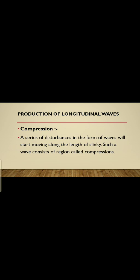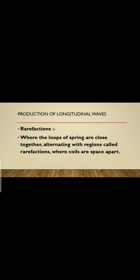A series of disturbances is produced in the form of waves traveling along the length of the slinky. Such a wave consists of regions known as compressions, where the loops of the spring are close together, alternating with regions called rarefactions, where the coils are far apart. When the coils are close together, that region is known as compression; when the coils are far apart, that region is known as rarefaction.